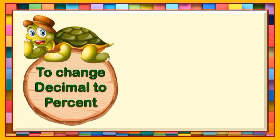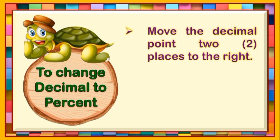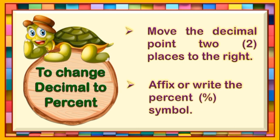To change decimal to percent, we need to follow these steps. The first one is to move the decimal point two places to the right. The second step is to affix or write the percent symbol. Let us put this into examples.